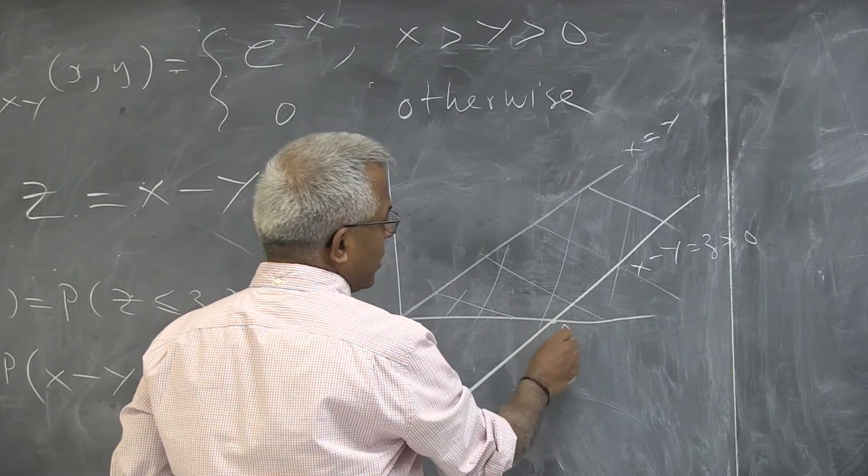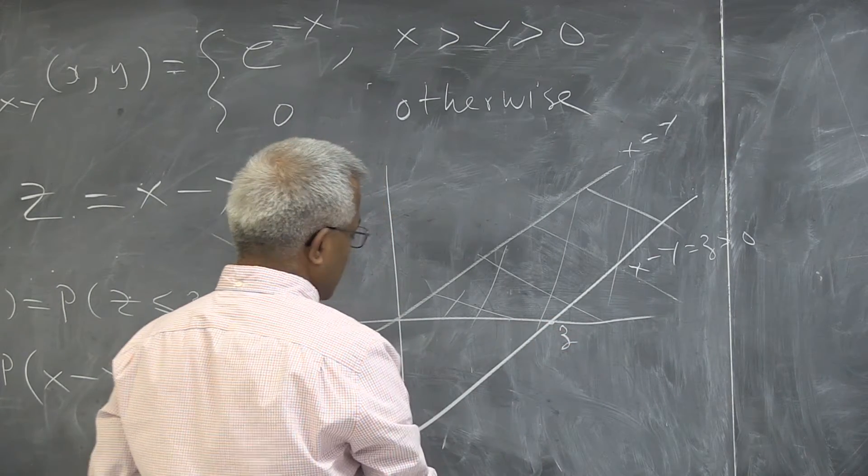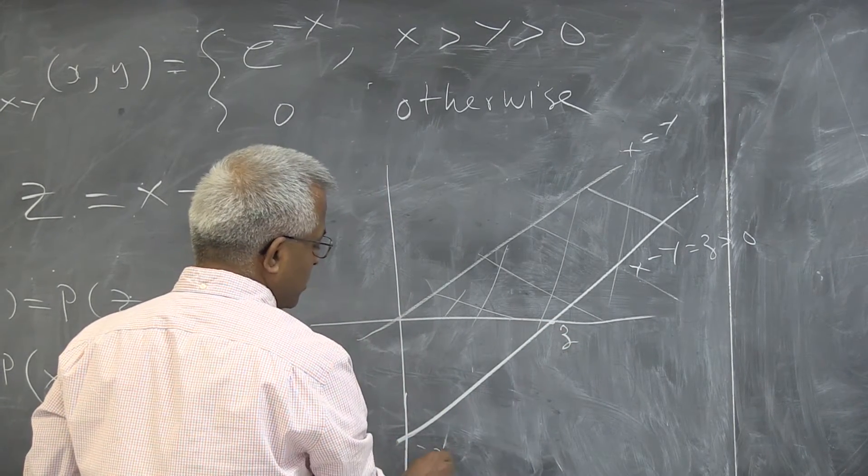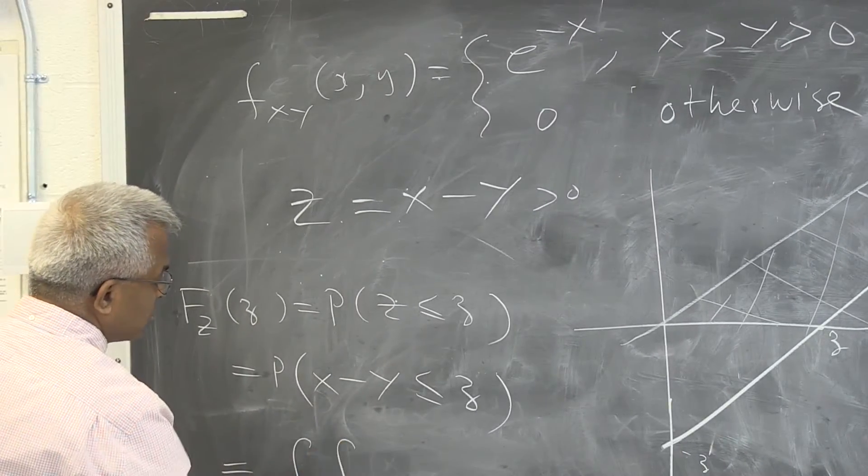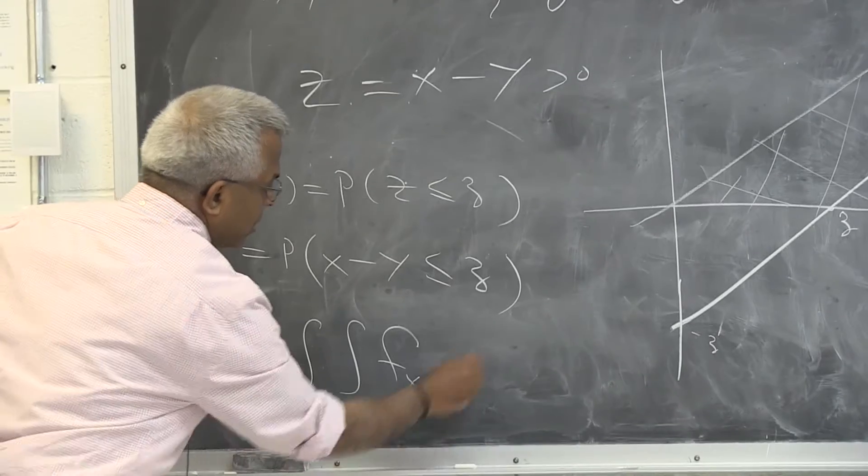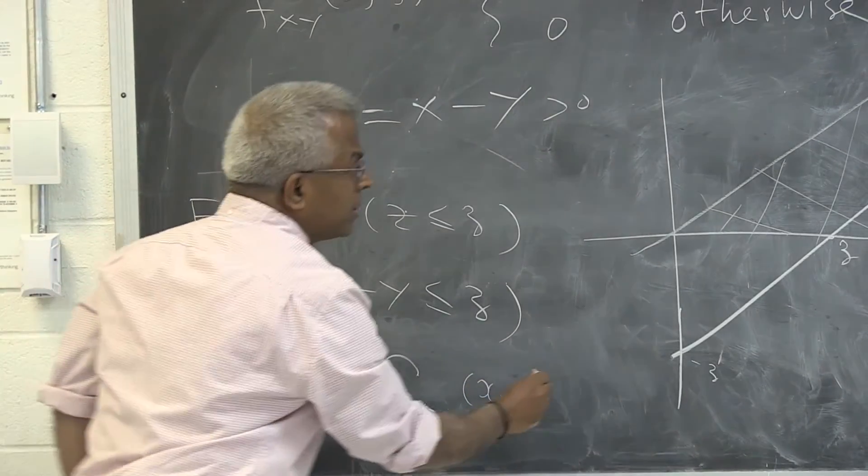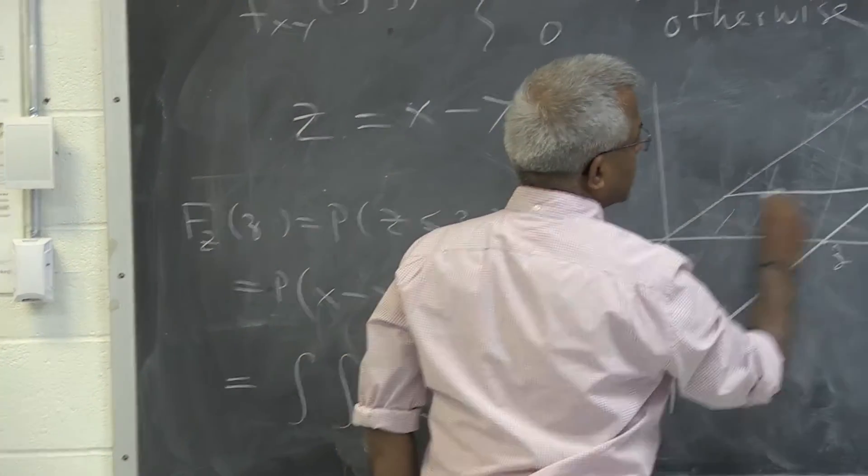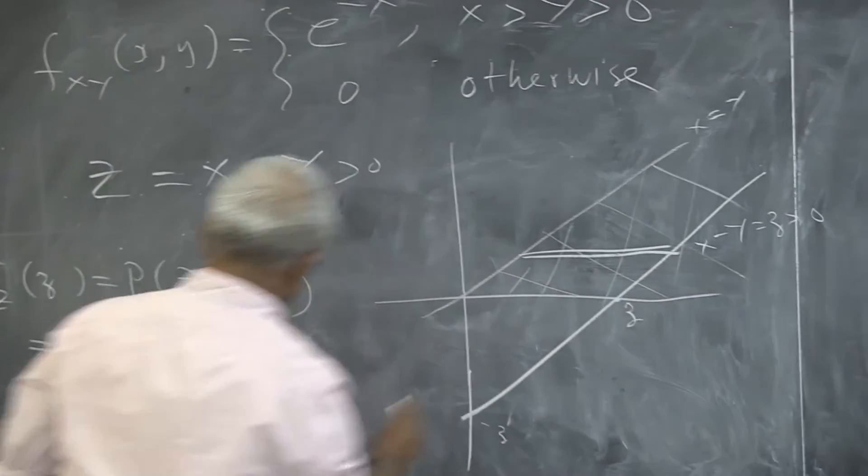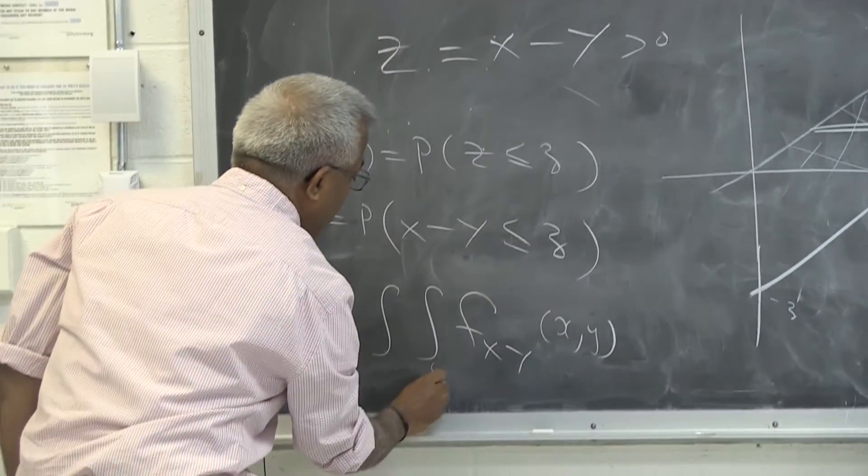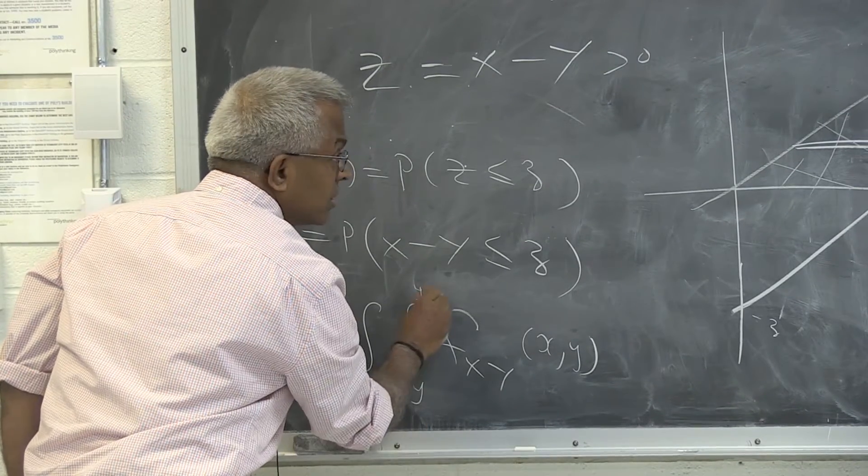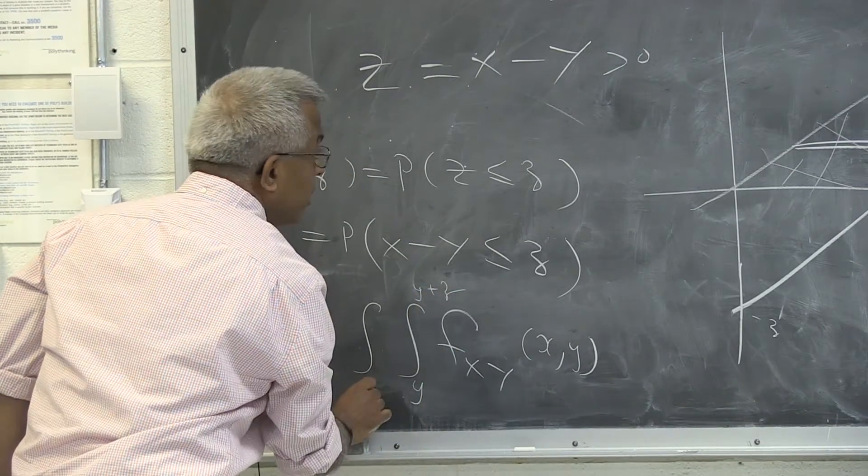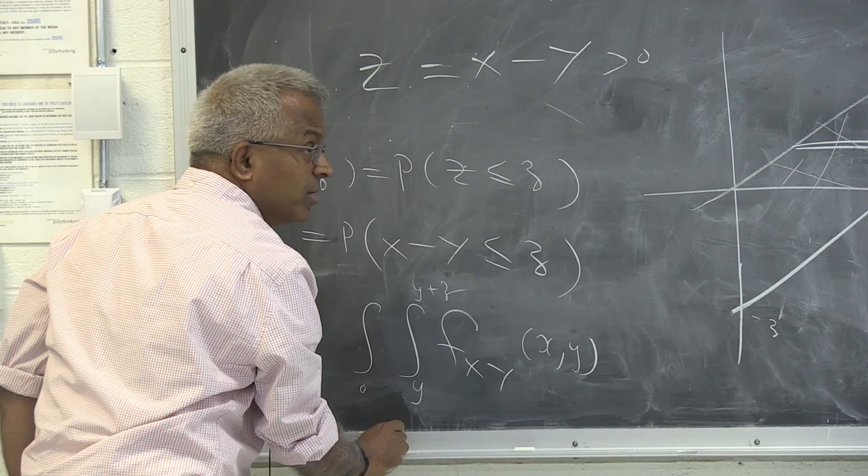When y is 0, x is z. And when x is 0, y is minus z, which is irrelevant. So this joint density function needs to be integrated over a strip like this. x goes from y to y plus z, right? And y goes from 0 to infinity, right?